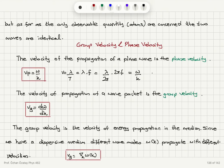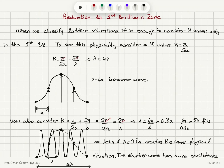We can see that these two situations are identical. Indeed, our k-values are periodic with 2π/a, while ω versus k is periodic with Δk of 2π/a. We see the same situation occurring when we have a k-value in the first Brillouin zone and also a k-value in the first Brillouin zone that is increased by one period.